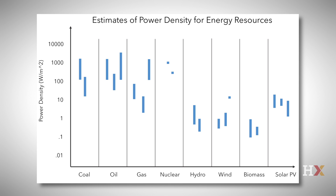Here is a rough comparison of the power densities of various energy technologies. First, note that this graph has a log scale. A plantation that produces 10 tons of dry biomass per hectare per year has a power density of half a watt per square meter, while a coal mine that sprawls over 25 square kilometers and produces 30 million tons of coal per year has a power density of 1,000 watts per square meter — a factor of 2,000 times more than the biofuel plantation.